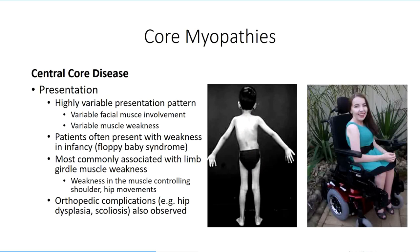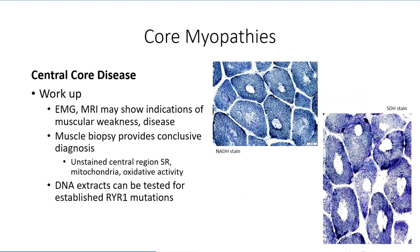As a result, initial workup may focus on a possible limb girdle muscular dystrophy diagnosis, which should lead to attainment of muscle biopsy samples. The biopsy sample will provide conclusive evidence. Staining for the reduced form of nicotinamide adenine dinucleotide, or succinate dehydrogenase activity, should be considered in a workup for limb girdle weakness and will demonstrate the central core region of poor staining, which is characteristic for the disease. From here, genetic testing can be performed with specific focus on the RYR1 gene.